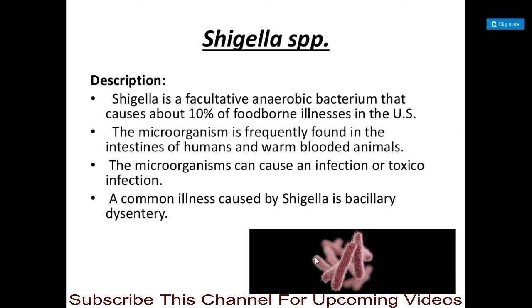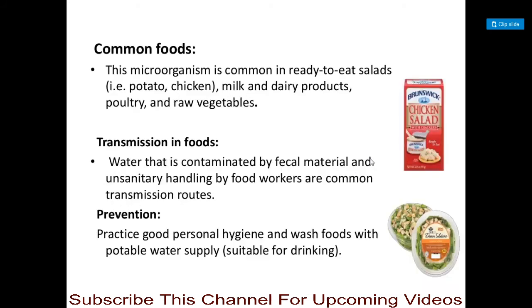Next is Shigella species. Shigella is a facultative anaerobic bacterium that causes about 10% of foodborne illnesses in the United States. The infection caused by Shigella is called Shigellosis, and the common illness it causes is Bacillary dysentery. The microorganisms are frequently found in the intestines of humans and other warm-blooded animals. Common foods involved include ready-to-eat salads such as potato and chicken, milk and dairy products, poultry, and raw vegetables. Transmission occurs via water contaminated by fecal material and unsanitary food handling.